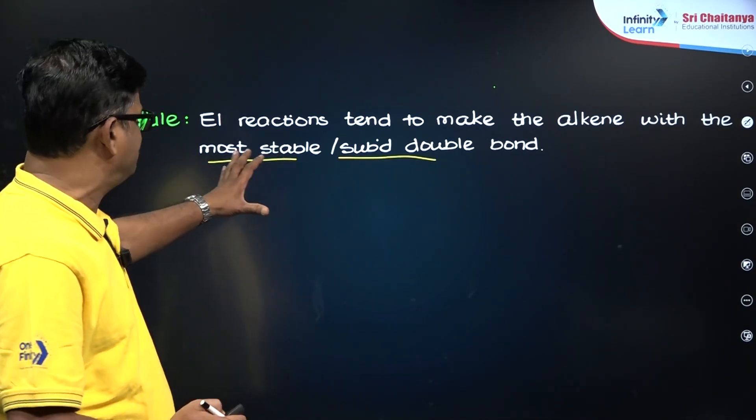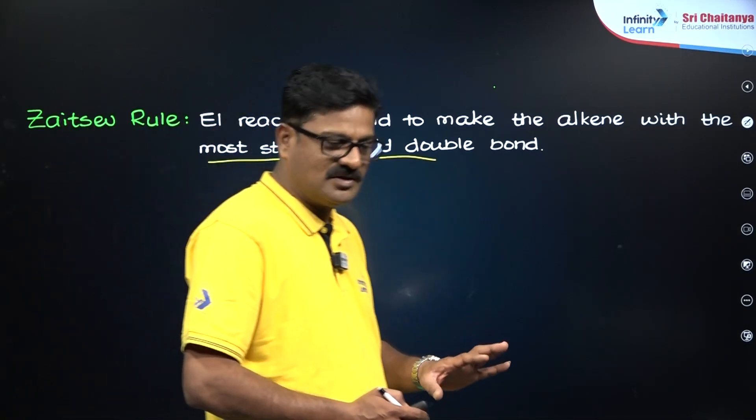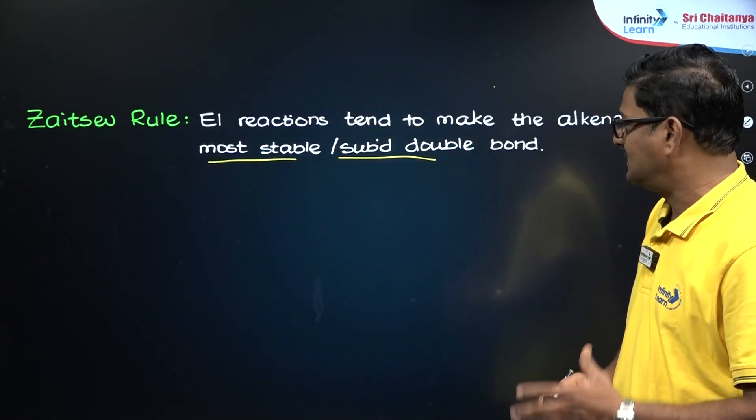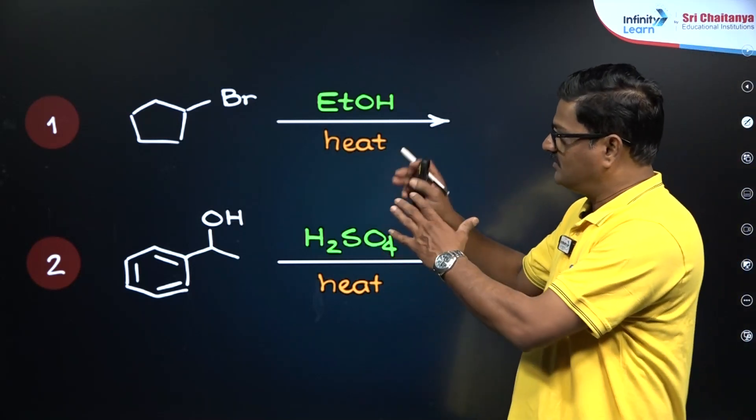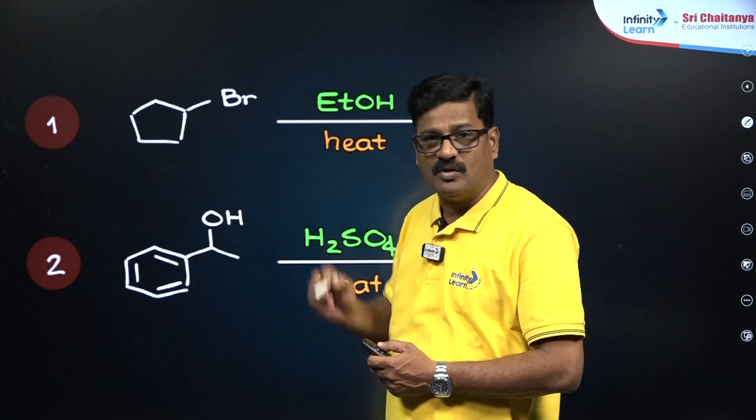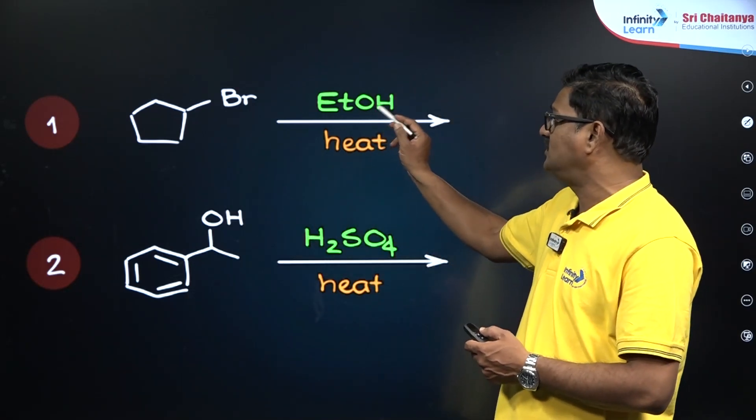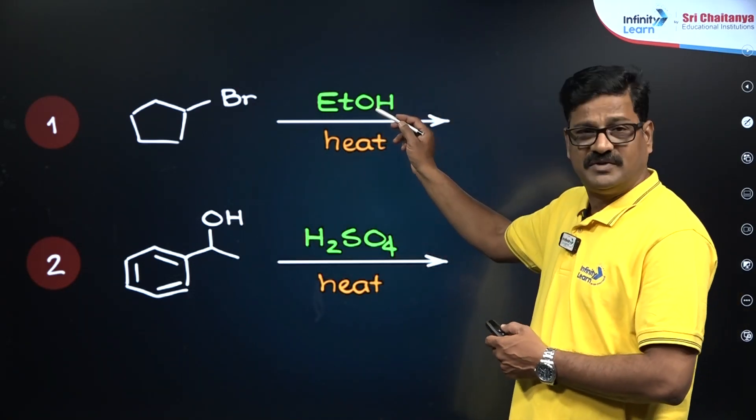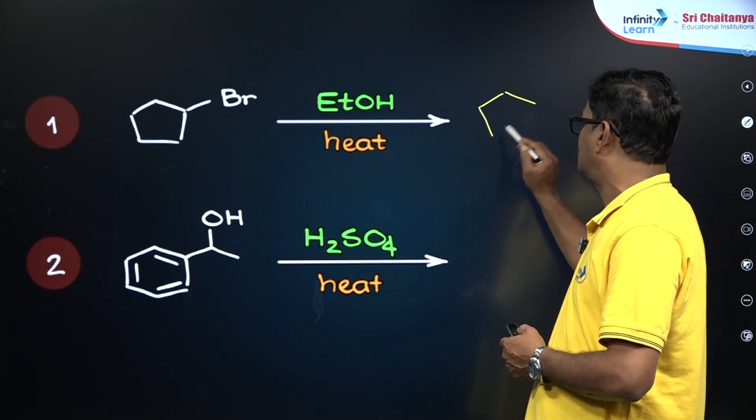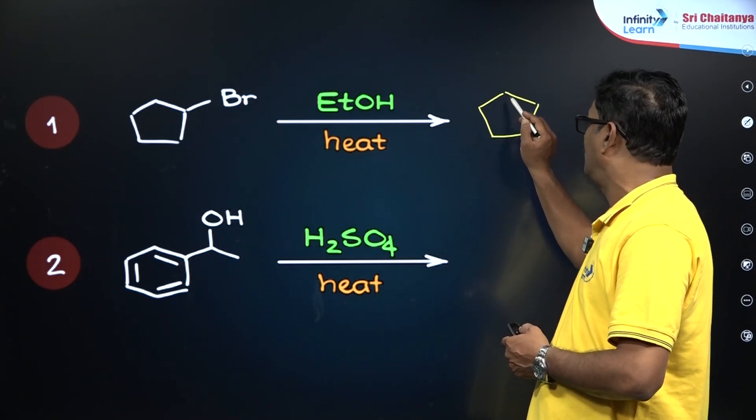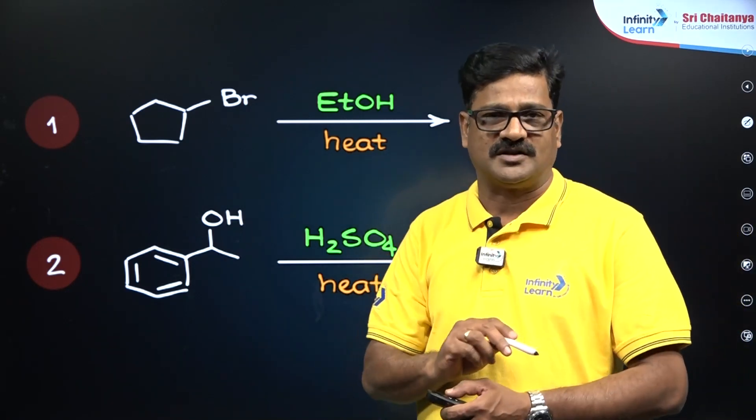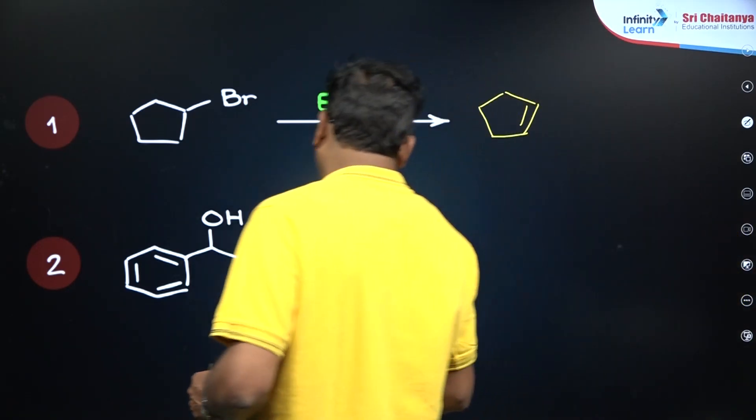Let us see a couple of questions based on this - how E1 reaction should follow the Zaitsev rule. Let us see products. Here it is a cyclopentene with a bromine. On elimination with EtOH, it is going to be dehydrohalogenation. It is a symmetrical structure, so you can make a double bond here or here - it doesn't matter. Only one type of product can be formed.